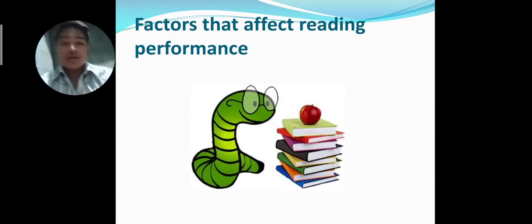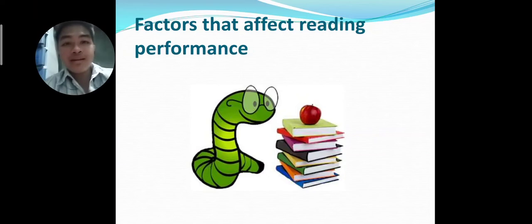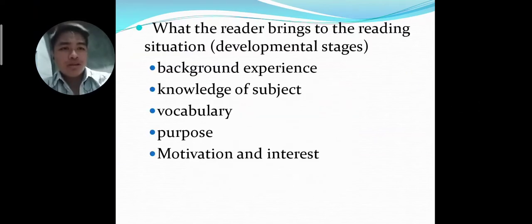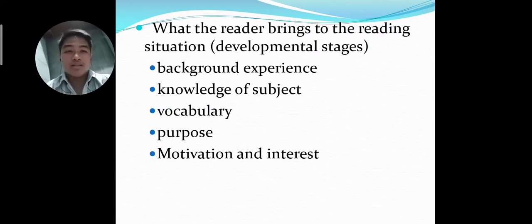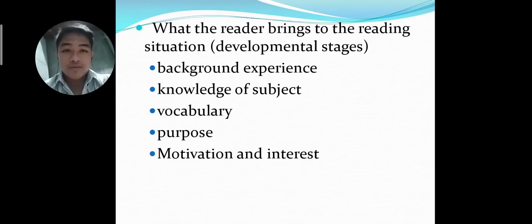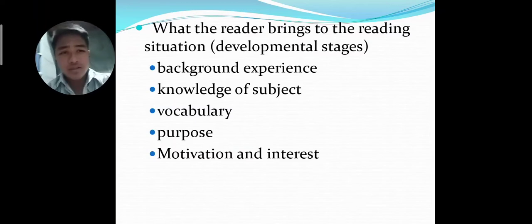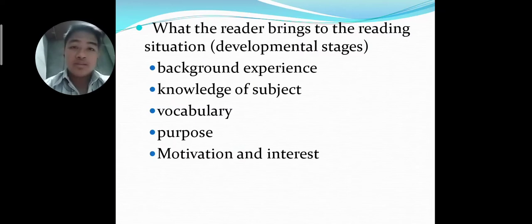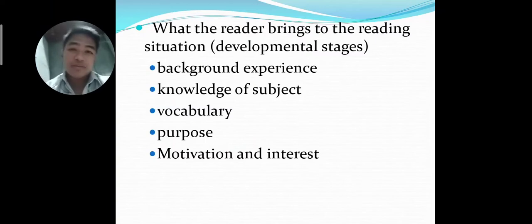There are so many factors that affect the reading performance of a person. The first one is what the reader brings to the reading situation, or the developmental stages, which contains the background experience, knowledge of subject, vocabulary, purpose, motivation, and interest. This really greatly affects the reader's performance when reading a certain selection, story, or novel. First is the background experience — if our reader is a bookworm, it is to be expected that the reader's reading performance is really good.